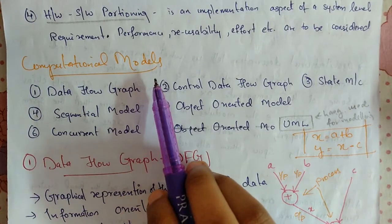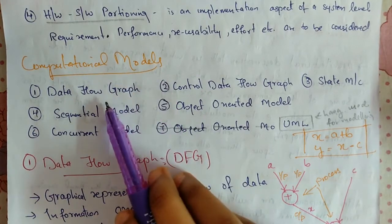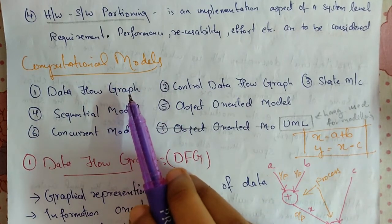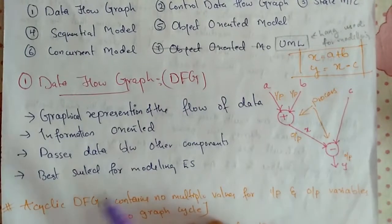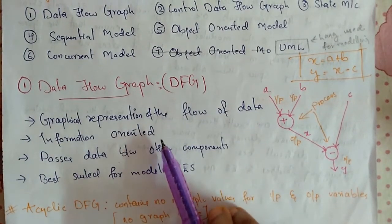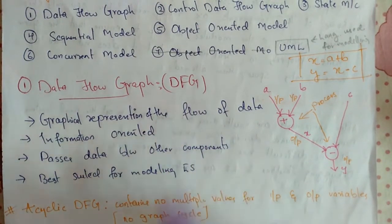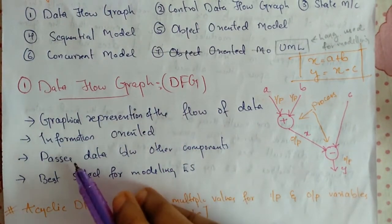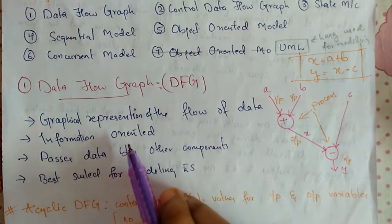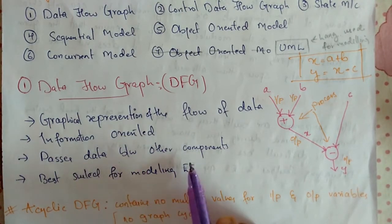Now we'll see the computational models of hardware-software co-design. The first one is the data flow graph. A data flow graph is a graphical representation of the flow of data. It is information-oriented and passes data between components. This is best suited for modeling embedded systems.